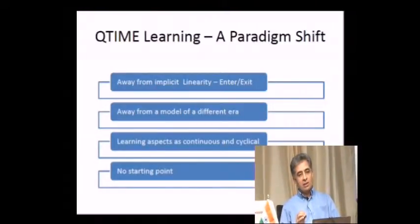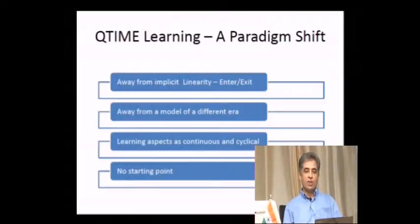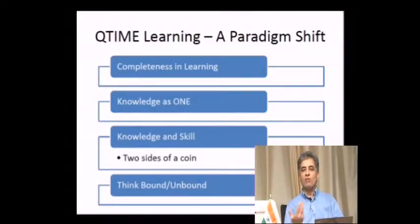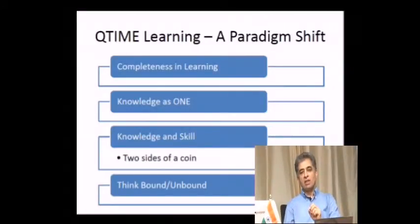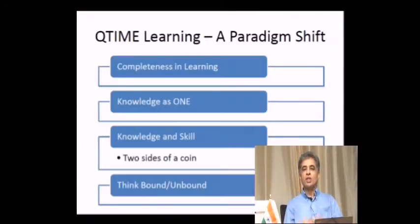The third paradigm shift is that learning aspects are continuous and cyclical with no starting point. Q-time learning gives completeness in learning — a 360-degree view. It looks at knowledge as one and treats knowledge and skill as two sides of the same coin. It promotes both bounded knowledge and unbound knowledge — beyond what you already know that you can acquire.